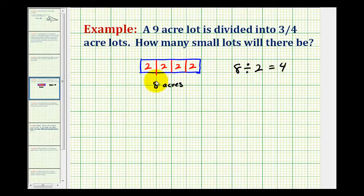So for this problem if we want to know how many three fourth acre lots we can get from nine acres, we'll take the total of nine acres and divide it by three fourths of an acre. And this quotient will tell us how many smaller lots we can have.